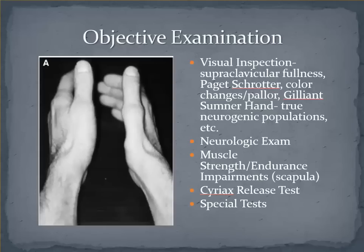From an observation perspective, you can look for color changes, fullness in the supraclavicular region, some of the posture issues we discussed, or observe for an edematous extremity. The picture shown of the right hand is a Gillian Sumner hand, and this is generally evidence of those with true neurologic causes — it involves severe wasting of the abductor pollicis brevis and, to a lesser extent, the hypothenar musculature. This can happen as the APB is innervated by the recurrent branch from the median nerve, but through the C8 and T1 nerve roots. Checking for muscle strength impairments, particularly in the scapular region, is an important consideration when postural factors may be a contributor. The SIRI-X release test essentially helps distinguish between the releaser versus compressor phenomenon mentioned earlier.